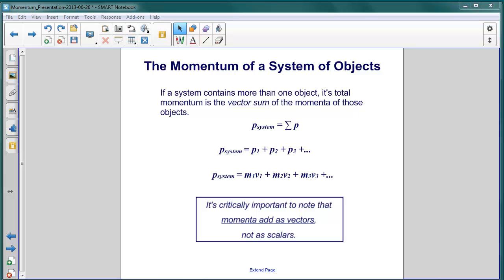Now let's consider the momentum for a system of objects. Probably the best way to understand this is to consider an example. Let's think about a swarm of flies. A swarm of flies is composed of many objects, all of which are moving.